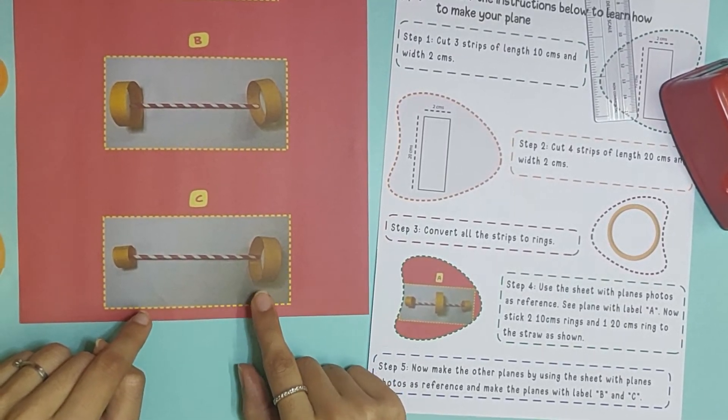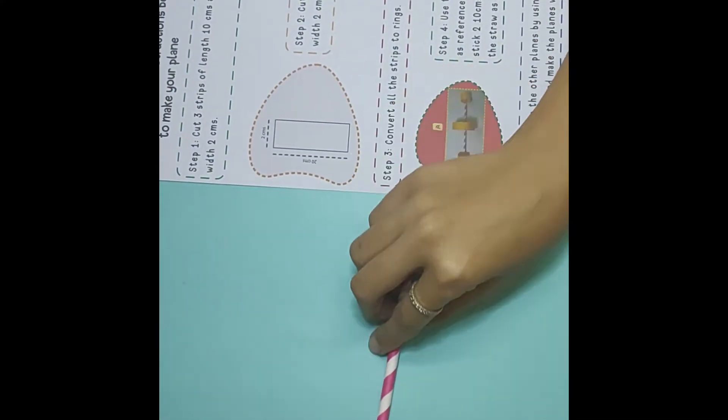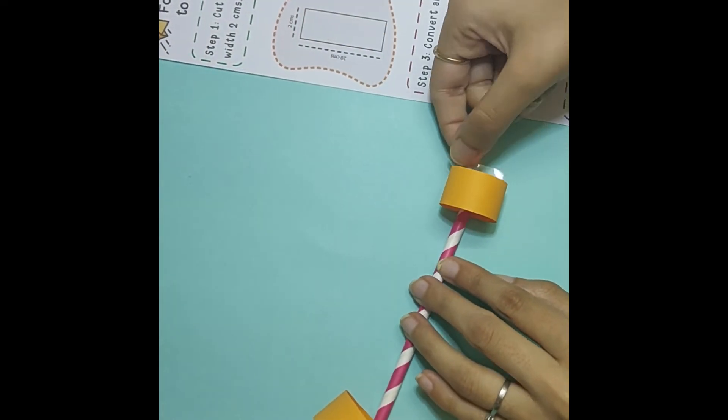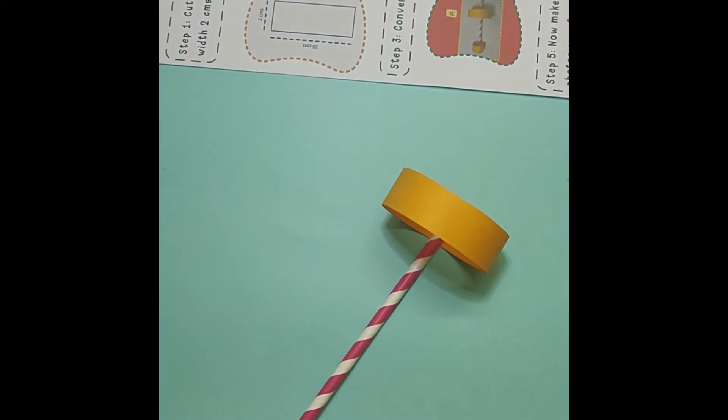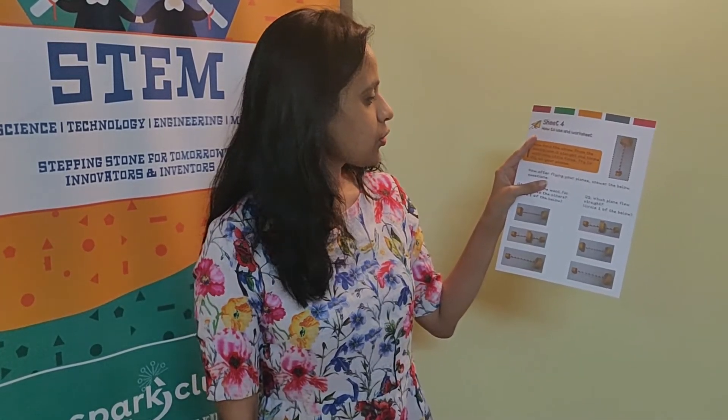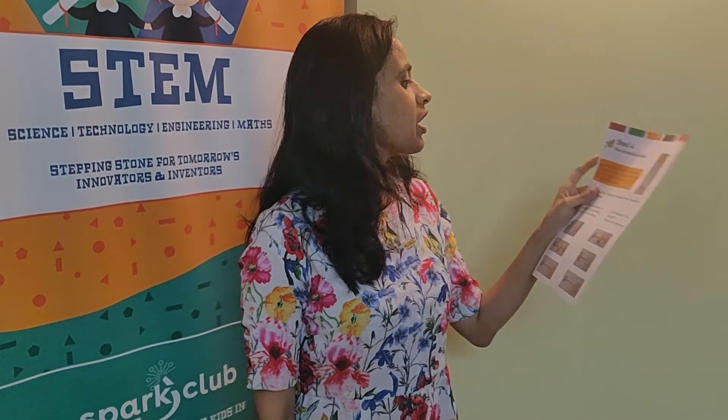Step 5: now make the other planes by using the sheet with planes photo, and make the planes with label B and C. In label B, the plane has 2 rings, both are of 20cm and they're both connected at the end of the straw. For the plane with label C, it's a straw with 2 rings, 1 small 10cm, 1 big 20cm, and they're both at the corners of the straw. Let's make them.